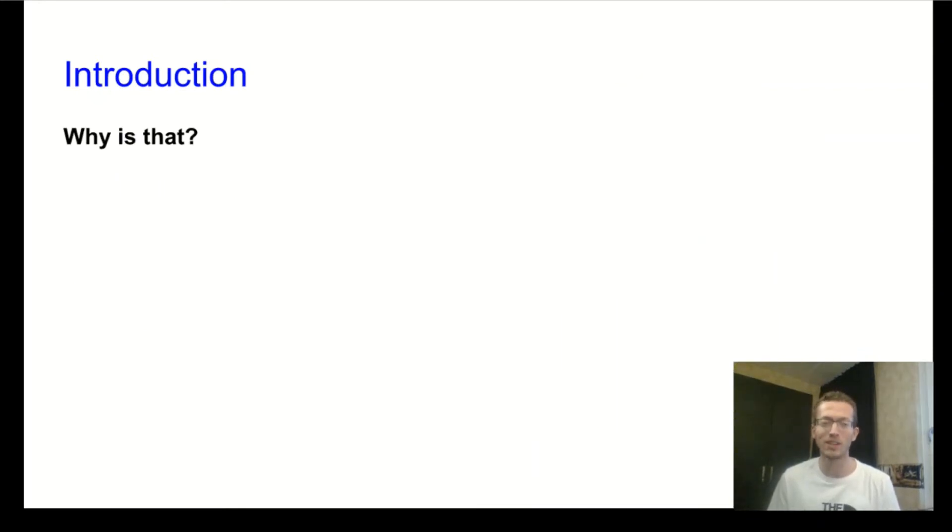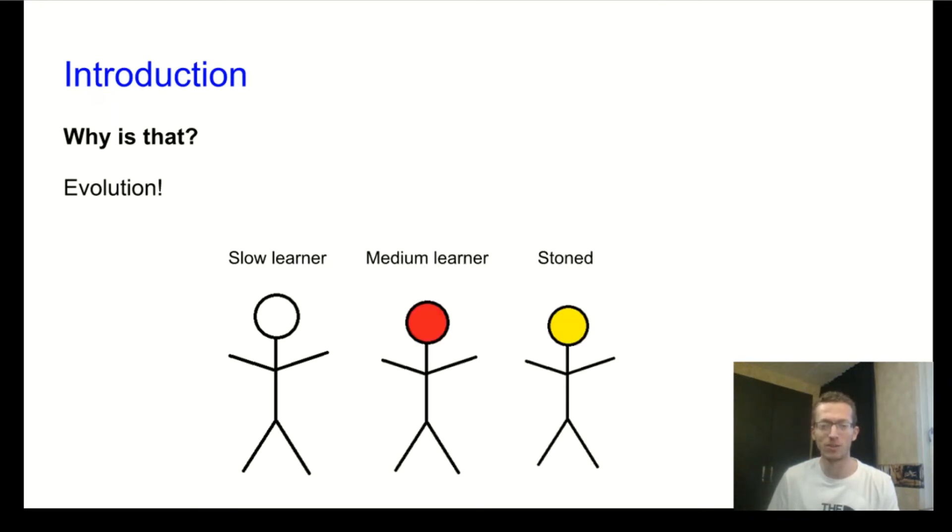To answer this question, we can take inspiration from evolution. We will do so by this very simple example where we have some individuals. Suppose we have a slow learner, a medium learner, a stump learner, and a fast learner.